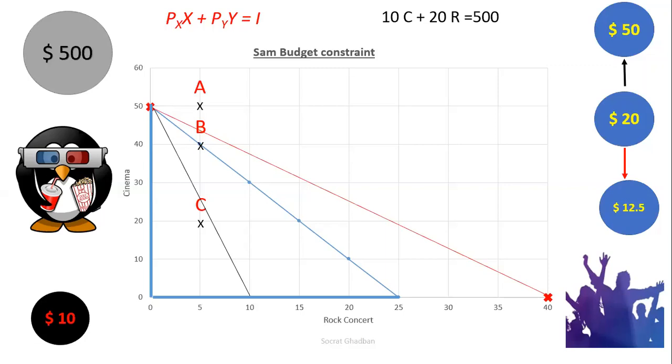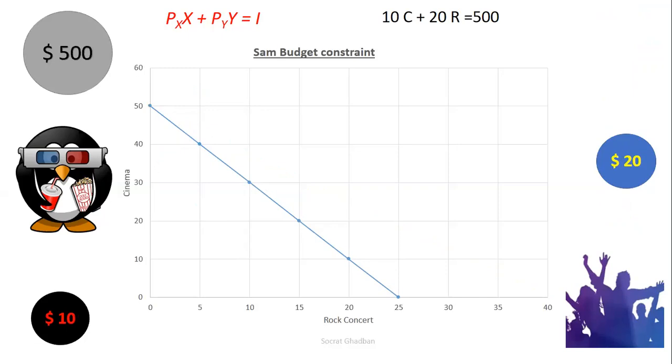Now if we are considering that we have a change, not in the price, however, in the budget. So if we see an increase in budget from $500 to $600, what will happen here, we will have a shift in the budget constraint line. And now Sam can buy more goods and services and more cinema tickets and more rock concert tickets. It means the quantity that he can consume is higher at any point. And this is why we have this shift in the budget constraint line.